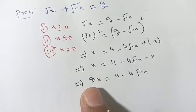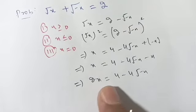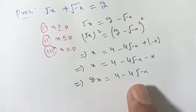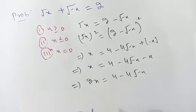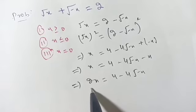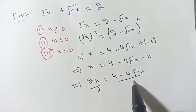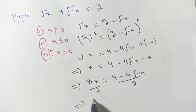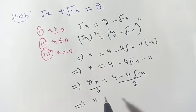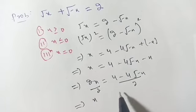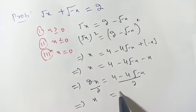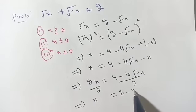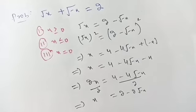Here the common factor is 2, so we divide both sides by 2. We have x is equal to 2 minus 2 root of minus of x.